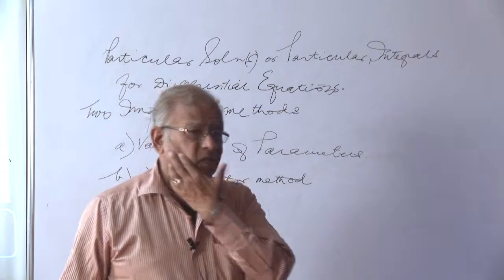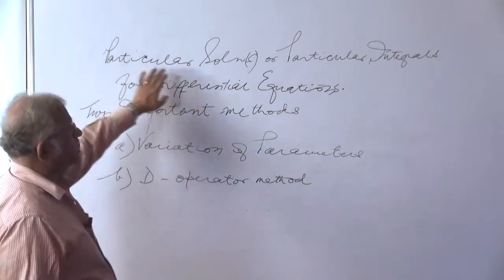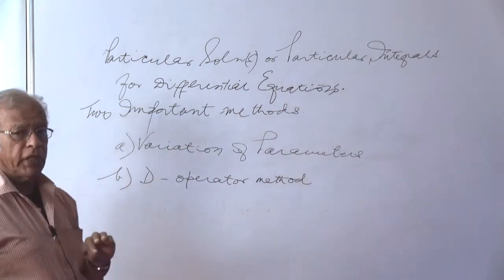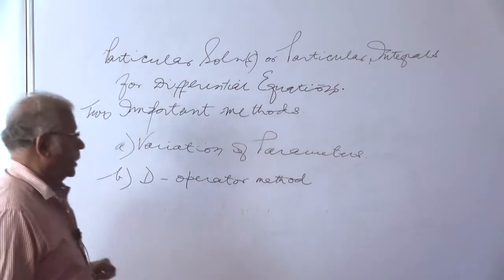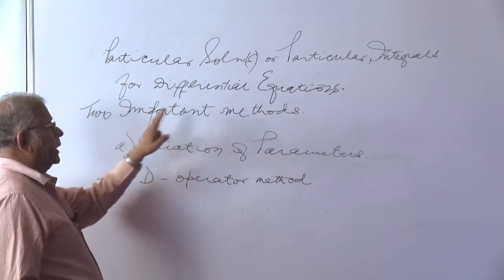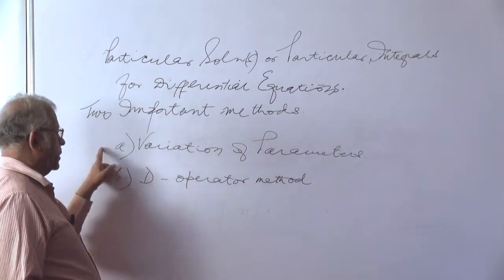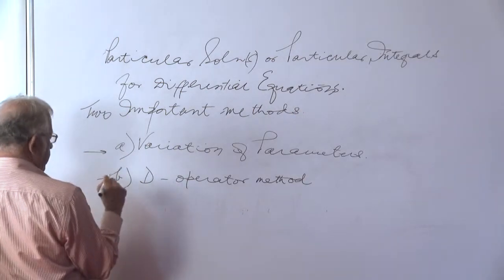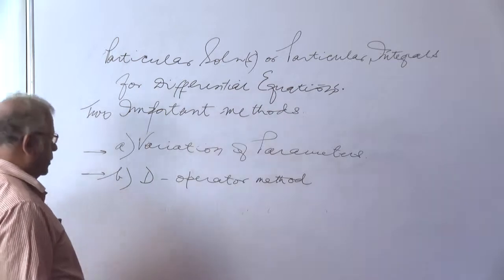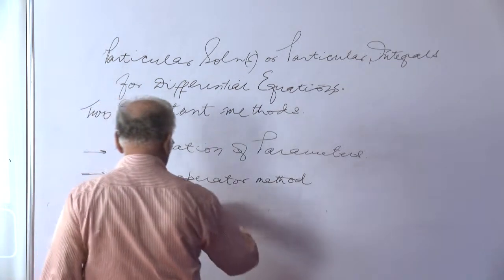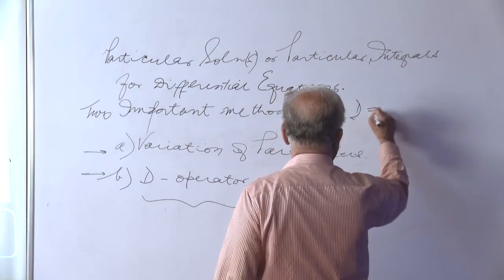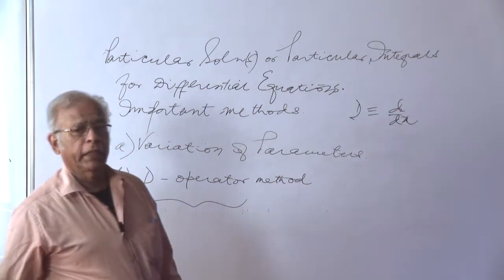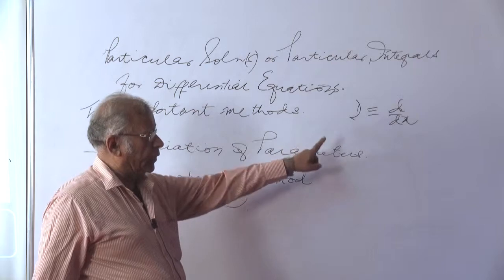We will now show how the particular integral is found. There are basically two important methods in the study of differential equations. The first is the method of variation of parameters, which is very important. The second is the D-operator method, where D is an operator — specifically d/dx when x is the independent variable.